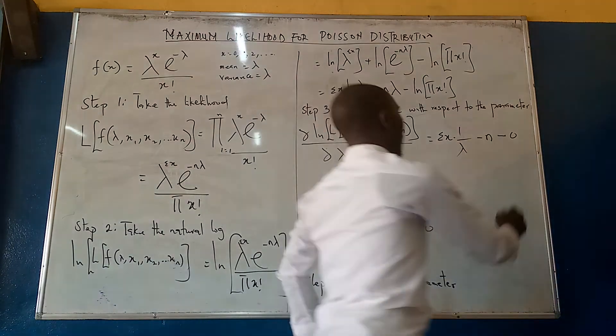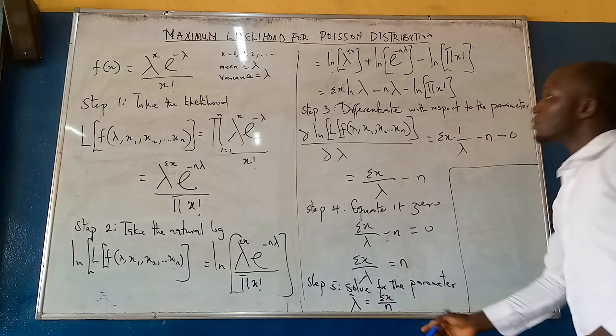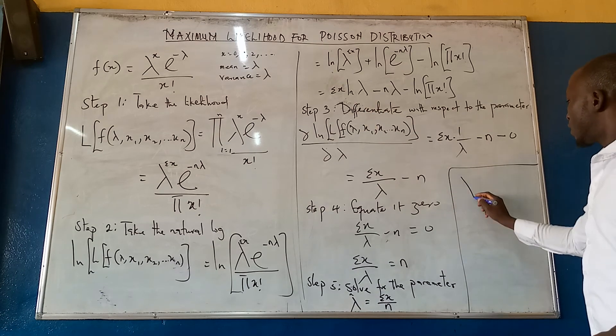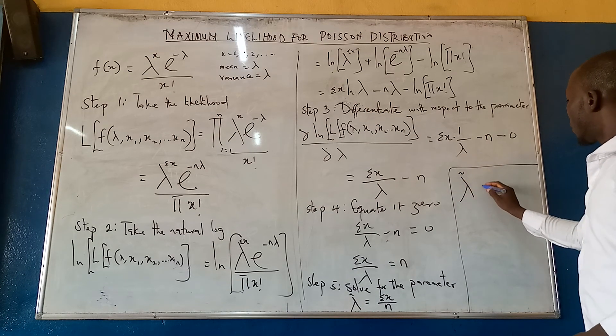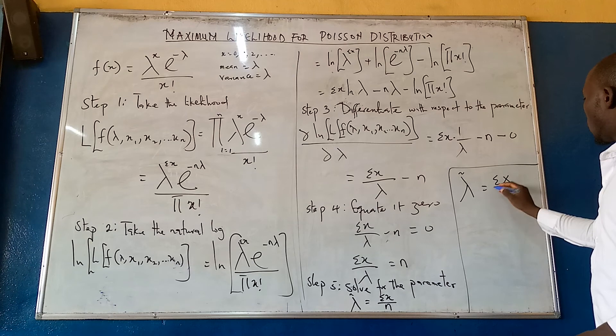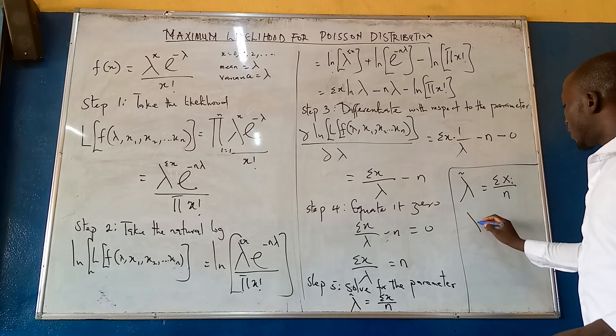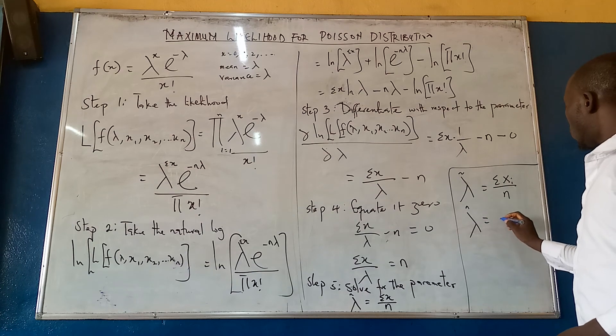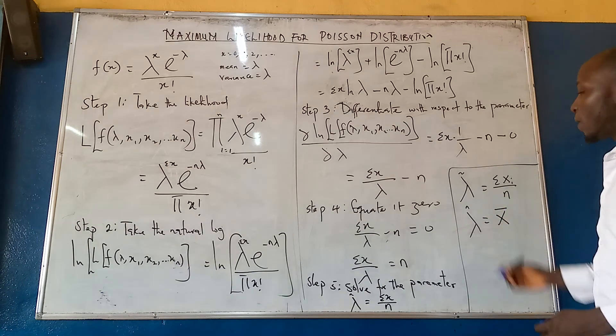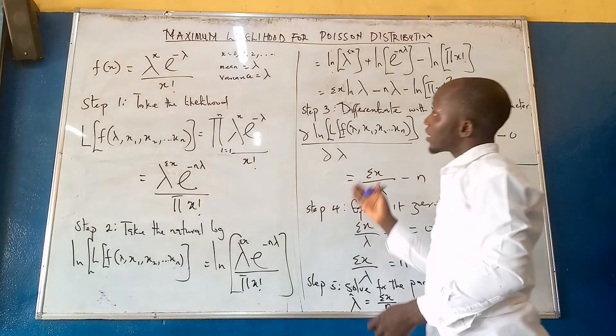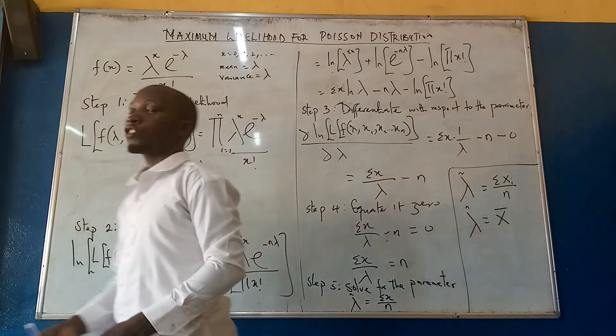lambda equals to summation x over n. So it means, in summary, the maximum likelihood of Poisson distribution is lambda equals to summation x over n, or we can write it as lambda equals to x bar. It means the maximum likelihood of Poisson distribution is the mean.